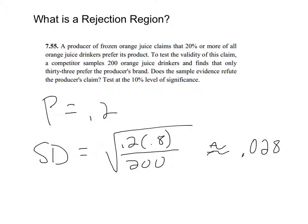Well, where do we go? How do we answer this? What's this whole rejection region all about? So the claim is the population proportion, the claim is that the producer says 20% or more of his orange juice drinkers like his product. So he's making the claim that the center's 20% or higher.